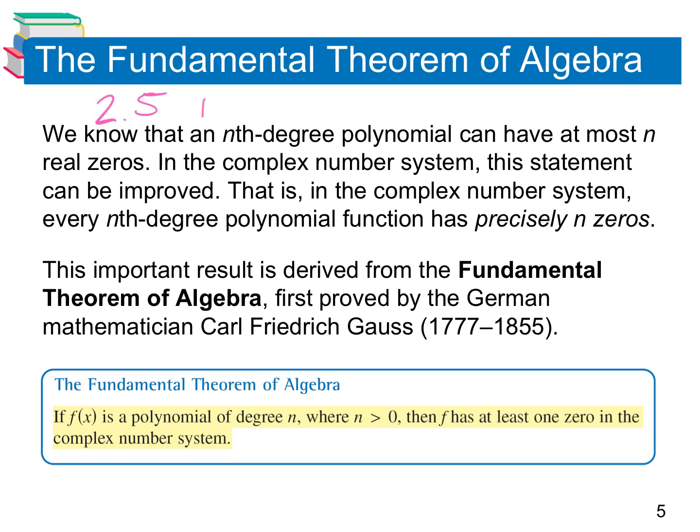Alright, 2.5 part 2. So in part 1 we talked about the fundamental theorem of algebra. If we had x to the 5th power, we knew that we would have at most 5 zeros — we would have exactly 5 zeros, including the imaginary or complex zeros.